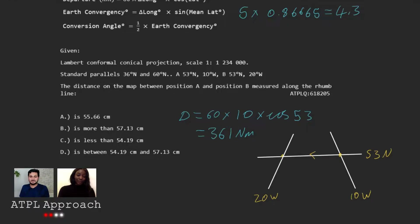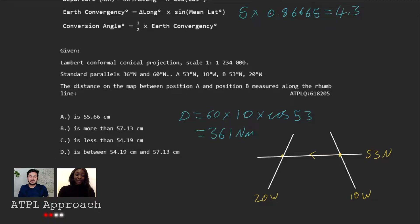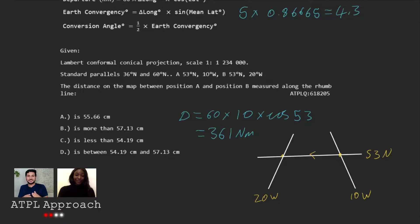So what number in this question do you think we're going to divide by? The 1,234,000. Yeah, it's not just one — it looks horrible but it's one million and something, right? So we can do that — if we do 361 nautical miles divided by that, we're going to get a very small number, but it's going to be a very small number of nautical miles, which is actually what it's going to be on the chart.